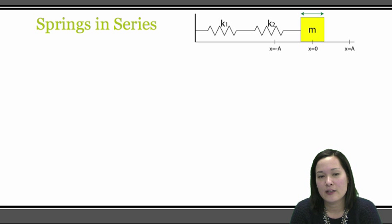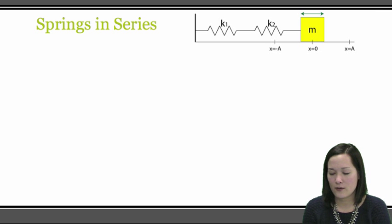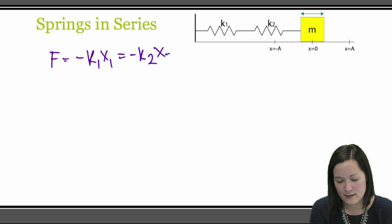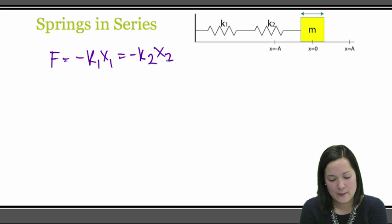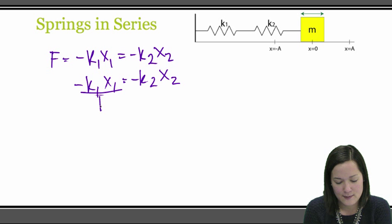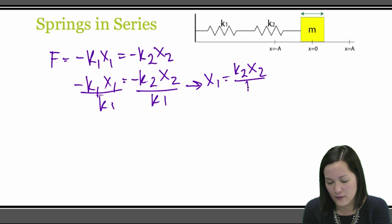For springs in series, you can calculate an equivalent spring constant for the system, beginning the analysis by realizing the force on each spring must be the same according to Newton's third law. So in this case, f equals negative k1 times x1, which is also equal to negative k2 times x2. If we set those equations equal and divide both sides by k1, we find that x1 is equal to k2 times x2 over k1.